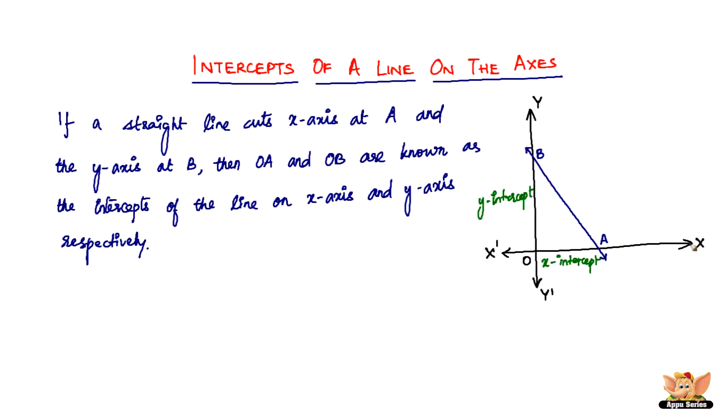Then it's called a positive x-intercept. If it is formed in the negative part of the x-axis, then it will definitely be negative. The same thing applies to the y-intercept as well.